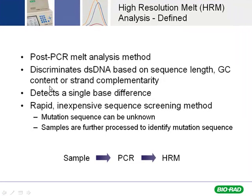Which is typically what we're looking at when we do a typical melt curve for specificity. But you can also look at strand complementarity, and this is where we get more into single nucleotide polymorphism analysis. These kinds of things include methylation analysis, which is another application to melt curve analysis, and it's the one I'm going to focus on.